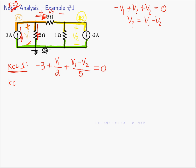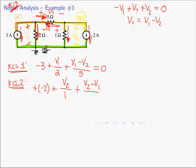Then we write KCL at the second node. All currents leaving: the current source gives minus 2 (opposing the arrow). The current going down through the 1-ohm resistor is V2 over 1, by passive sign convention. The current leaving node 2 back toward node 1 through the 5-ohm resistor is (V2 minus V1) over 5. KCL says that equals zero.